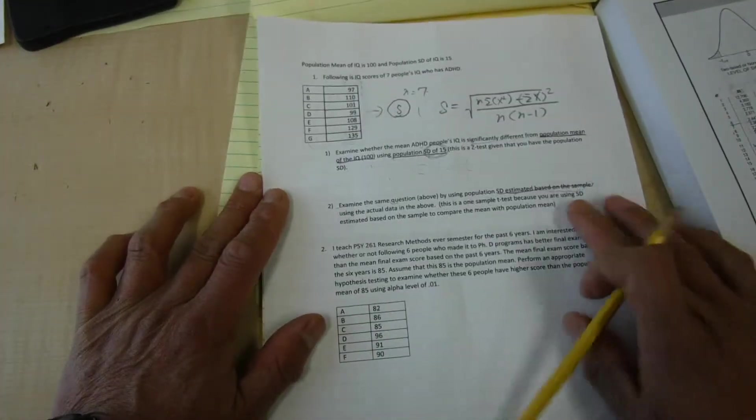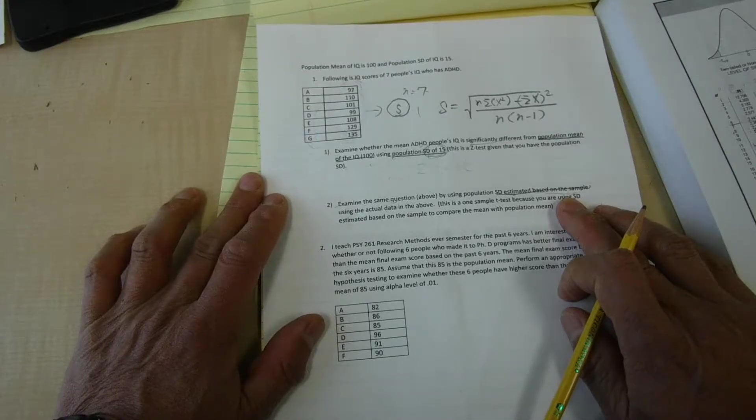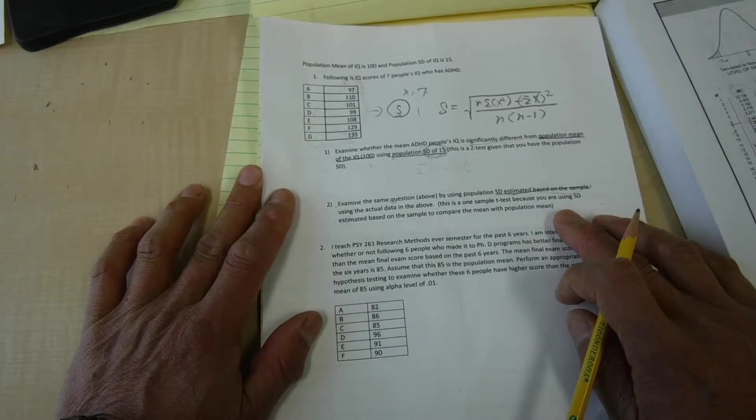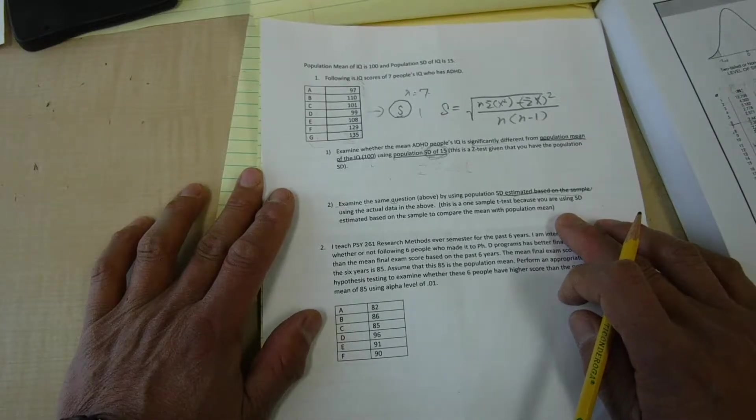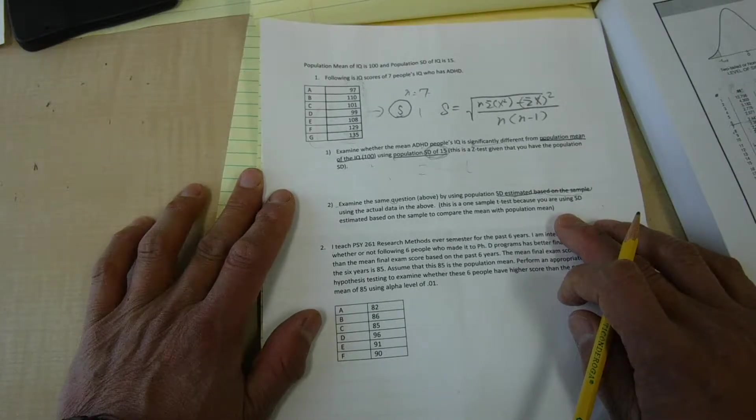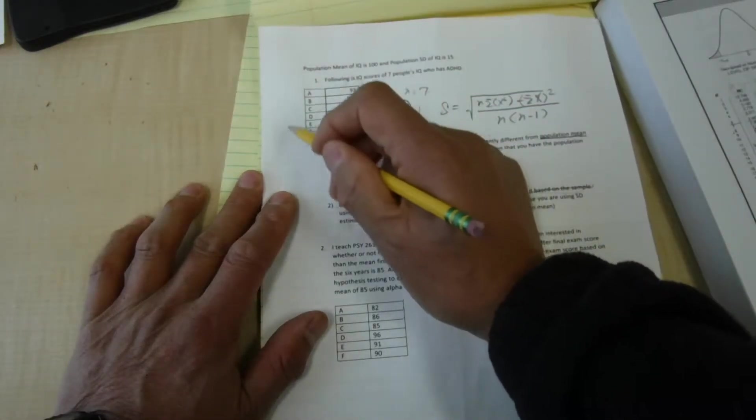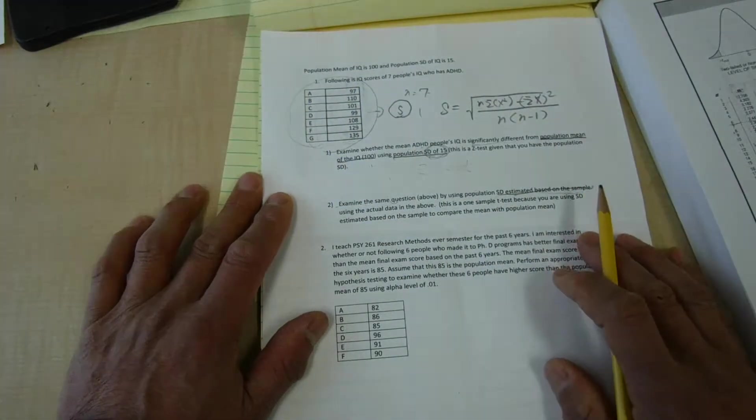Now we are going to do a demo of computing one sample t-test. We are going to use the exact same question from the practice computation used for z-test. So these are the numbers that we are going to use.